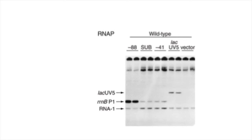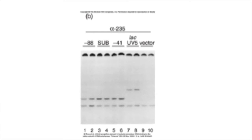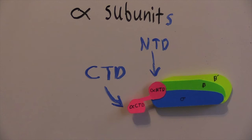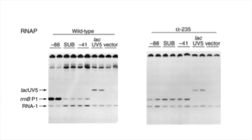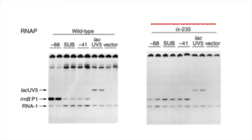The second experiment was set up in essentially the same way as the first, except this time when RNA polymerase was added, the C-terminal domain of the alpha subunit had been removed. Focusing on the experimental bands, the band intensities are all very similar across conditions. This shows that when the C-terminal domain of alpha is removed, even if an UP element is present, transcription levels are equivalent to as if the UP element wasn't there at all.